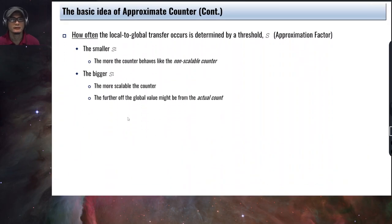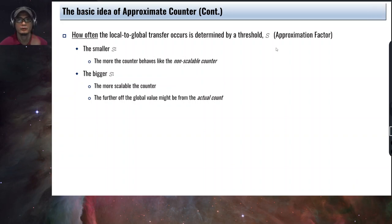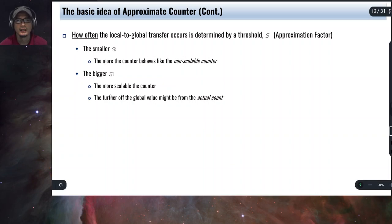The question is how often should the local-to-global transfer occur. This value is set by a threshold value S, which is called the approximation factor. The behavior is similar to round-robin scheduling where we have a time quantum Q. Here we have a threshold S that determines how often the transfer will happen. The smaller the approximation factor, the more the counter behaves like a non-scalable counter. But the bigger the S, the more scalable the counter is — however the global value might drift further from the actual count.